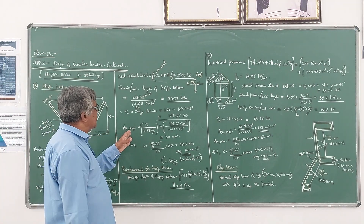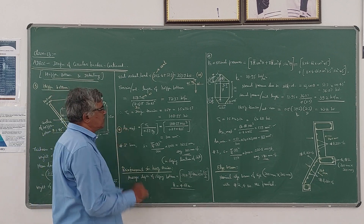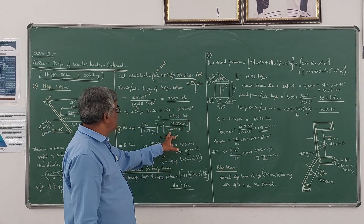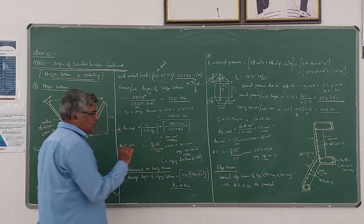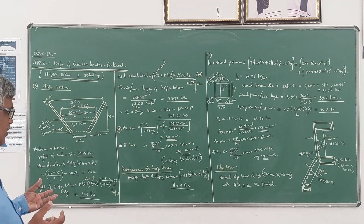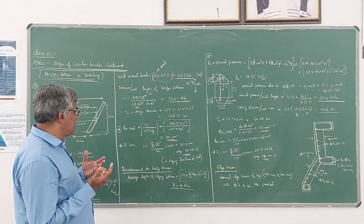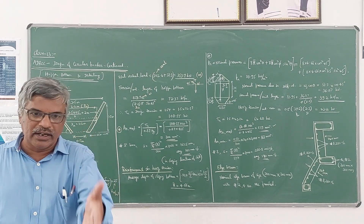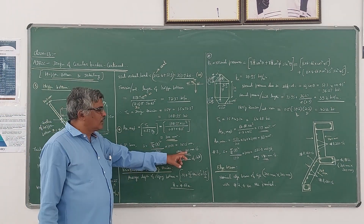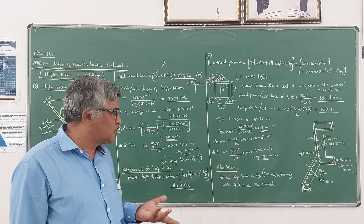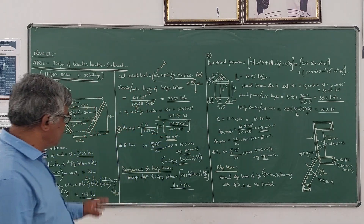Now the Ast required for that tension is Tu divided by 0.87 fy. We substitute in Newtons, so into 10 to the power 3, divided by 0.87 into fy, the grade of steel, and we are getting 300 mm square. The minimum steel is 0.12 percent of the cross section of the hopper bottom, which comes out to be 168 mm square as calculated in the previous lecture. Assuming 8 mm diameter bars, spacing comes to 168.5, reduced to 160 mm. So in the sloping direction of the slab, we are getting spacing as 160 mm center to center.